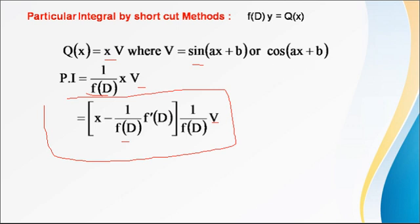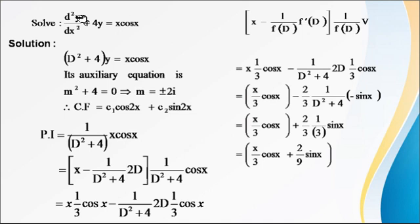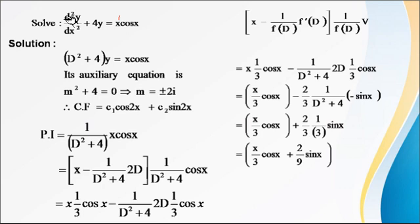See one example. Solve d²y/dx² + 4y = x·cos(x). This power is 1, so first write this in operator form, replacing d²/dx² with capital D². So D² + 4 of y equals x·cos(x). The auxiliary equation is f(D) = 0, that is m² + 4 = 0.